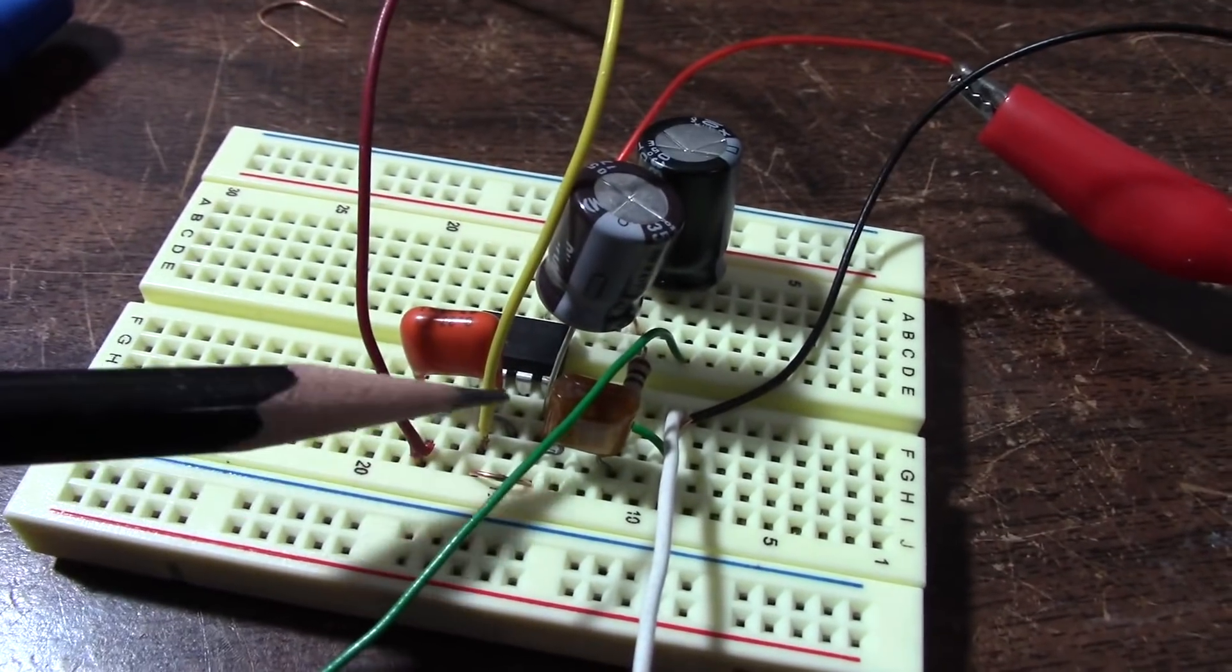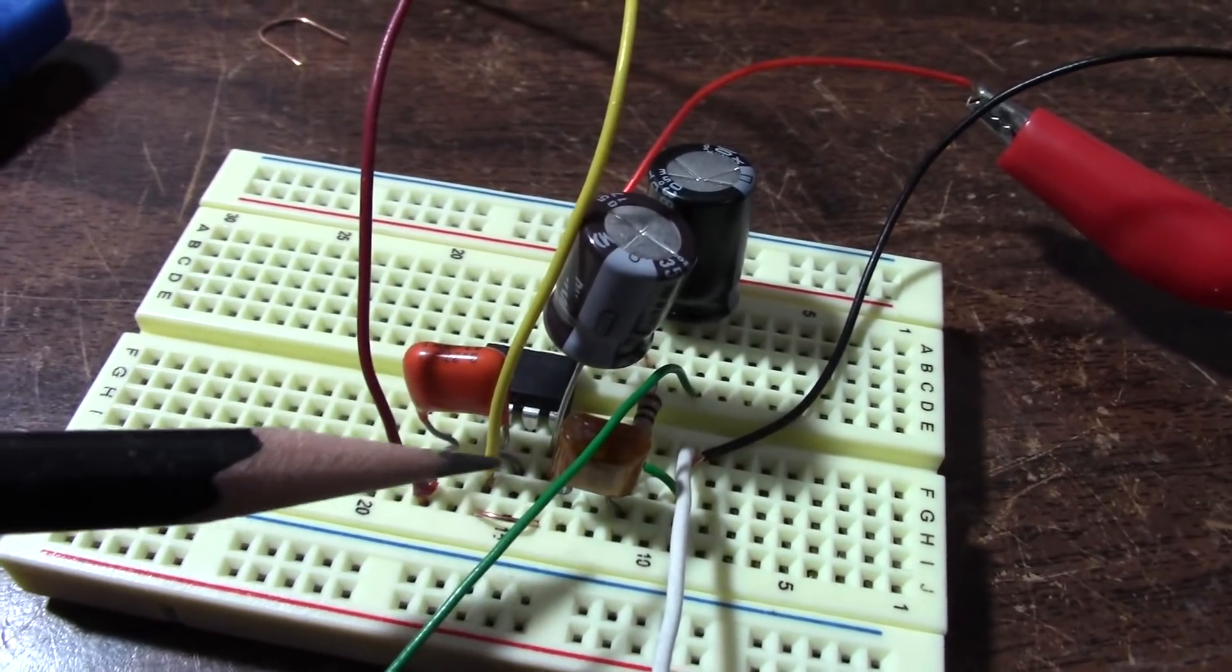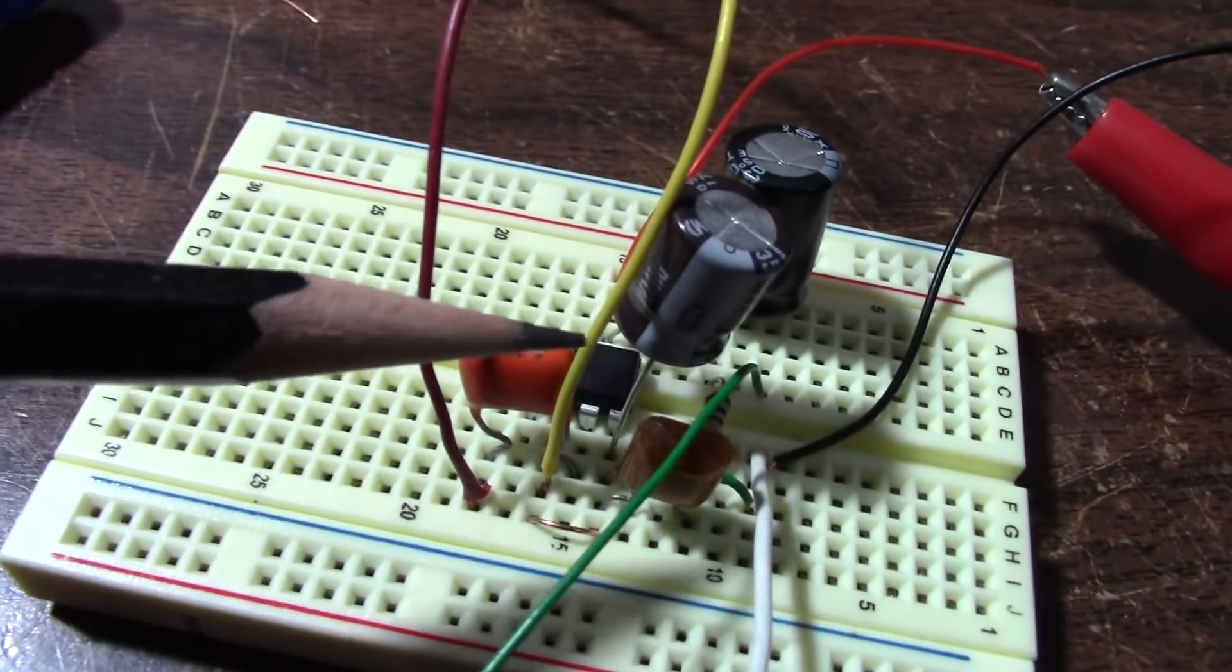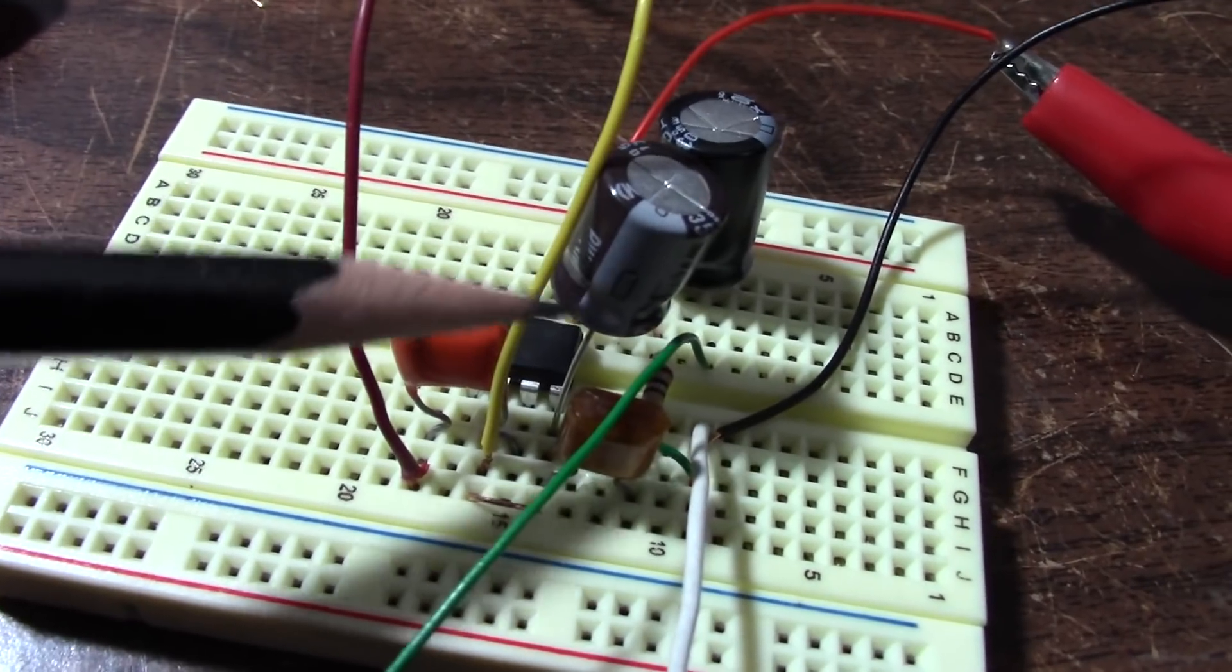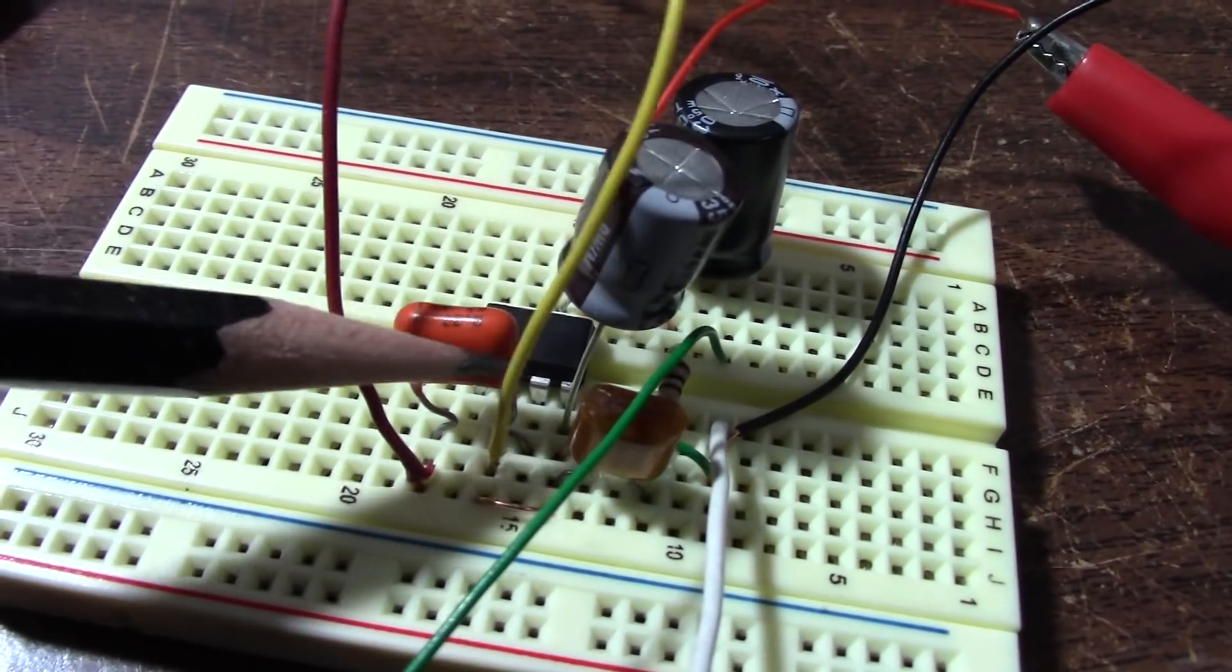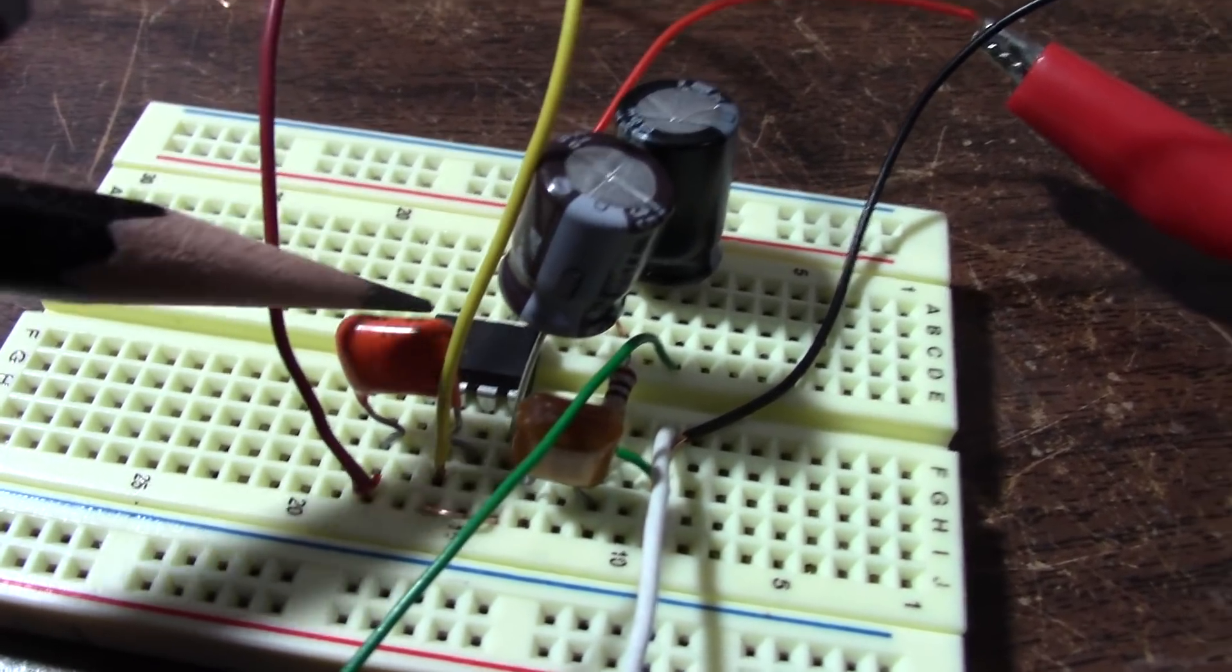So again, I just used the star ground. And I don't think I mentioned before, but this bypass cap is across the supply pins as close as I can plug it into the socket board.